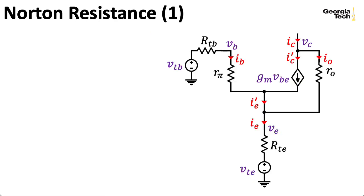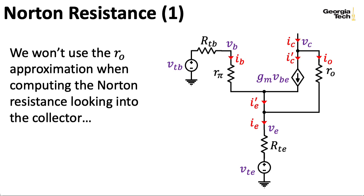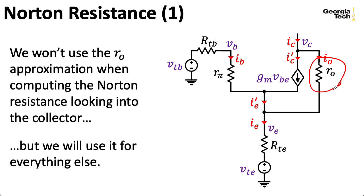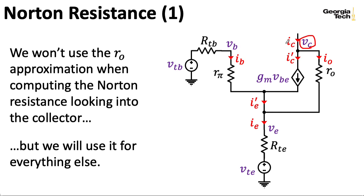Now we need to compute the Norton resistance looking into the collector. This is the most complicated bit of circuit analysis we're going to do in this trilogy of lectures, largely because when doing this computation, we're not going to use the R-naught approximation — we are going to include resistance R-naught here. This is only for looking into the collector; when we compute resistances looking into the base and emitter in upcoming lectures, we will assume R-naught is infinite. To compute the Thevenin resistance, I need to zero out these independent voltage sources. Since I have a controlled source here, I can either drive the voltage with an independent source and figure out the current, or treat the current as an independent source and find the resulting voltage. In this particular circuit, it's easiest to use a current source and then find the voltage.